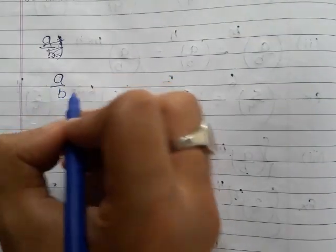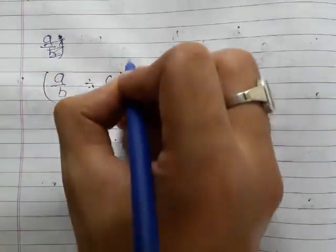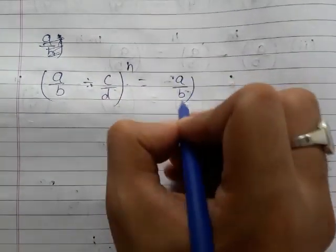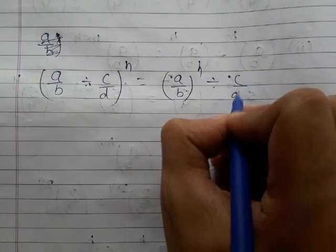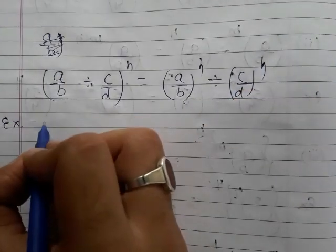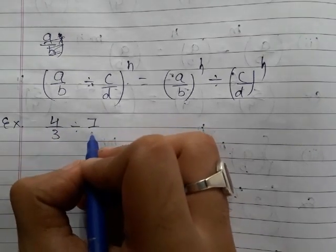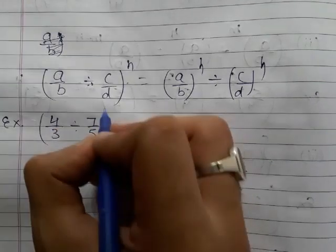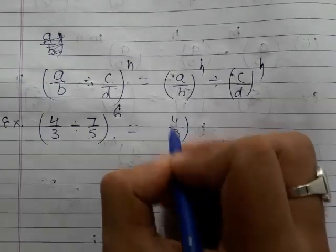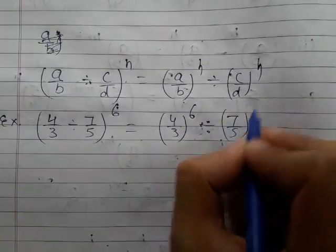Similarly, if two rational numbers a upon b divided by c upon d are raised to the power n, we can write (a/b)^n divided by (c/d)^n. For example, (4/3 ÷ 7/5)^6 becomes (4/3)^6 divided by (7/5)^6.